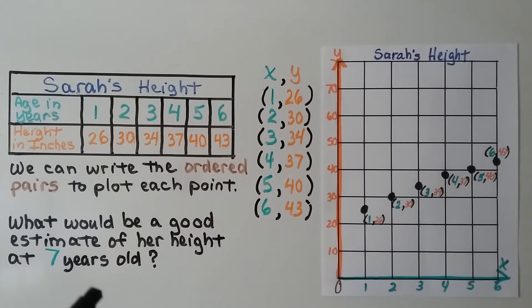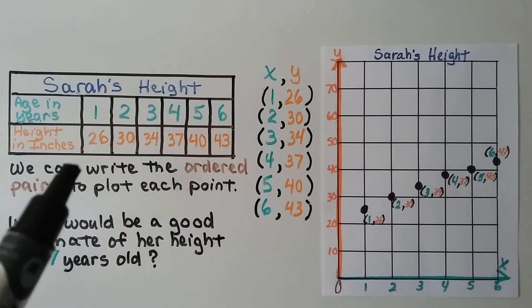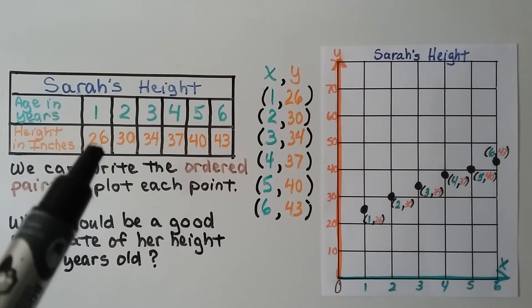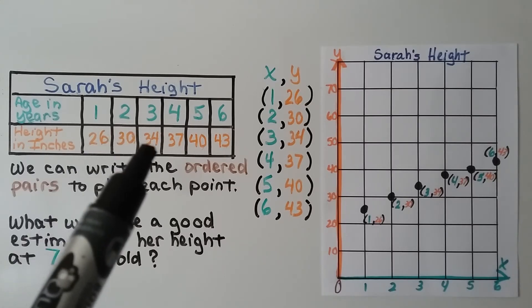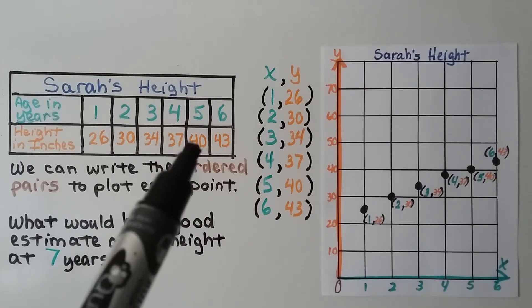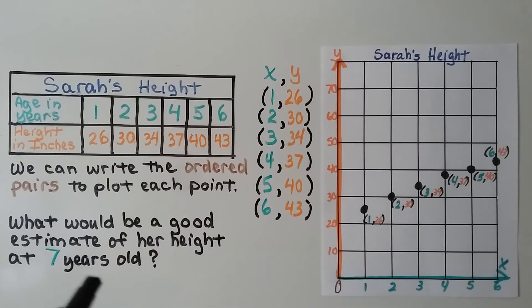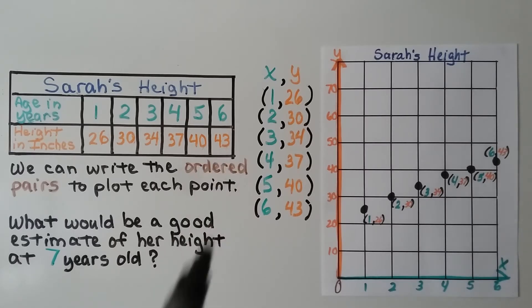What would be a good estimate of her height at seven years old? We can look at the difference between the years and the inches. She grew four inches by the time she was two, another four inches by the time she was three, then three inches the next year, three inches the next, and three inches the next. So if we wanted to predict her height at seven years old, we could add three inches — it'd be about 46 inches for a good prediction.